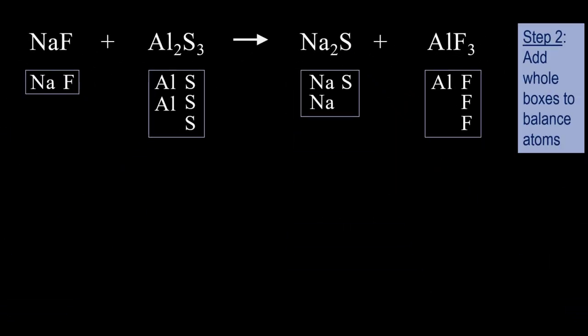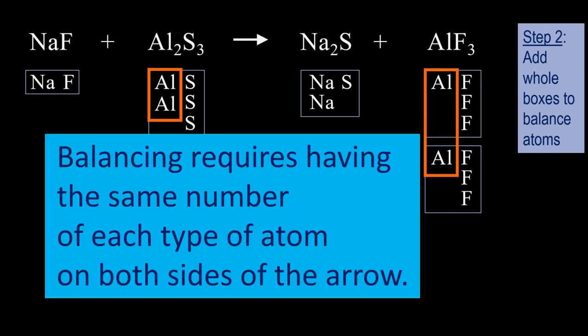Step 2, add whole boxes to balance atoms. There are 2 aluminums on the left, and so we need to add an entire box of AlF3 to get another Al to balance the aluminums. Remember that balancing requires having the same number of each type of atom on both sides of the arrow, and so the aluminums are balanced.